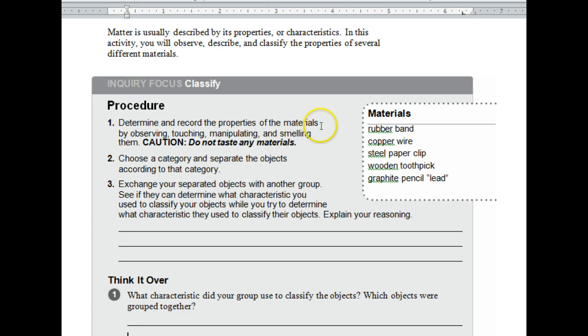So determine and record the properties of the material by observing, touching, manipulating, that means like moving it around, and smelling them. When you smell them, you need to waft. Remember how to waft. Don't taste any of the materials. Remember you're looking for properties. Shape is not a property. Color is not really a property because you can change the color without changing the material.